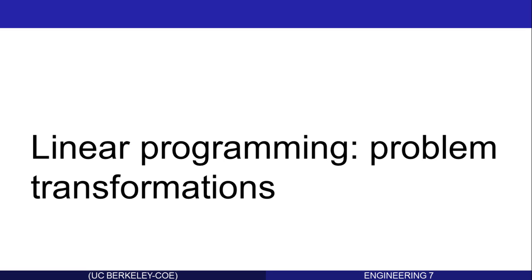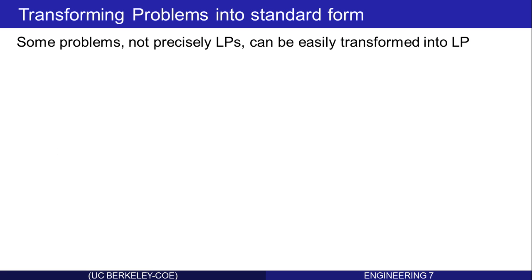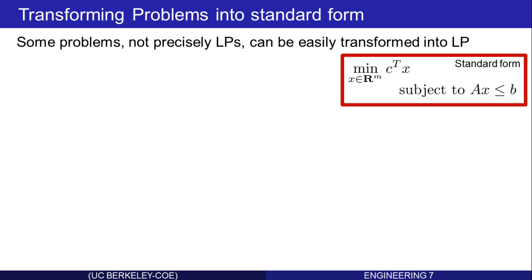Some optimization problems are not in the standard form of linear programming, but through transformations can be brought to that form. In this unit, we'll look at several examples. We'll start with some really easy ones. Let's recall what the standard form is: a minimization of a linear function, subject to a collection of linear inequality constraints.